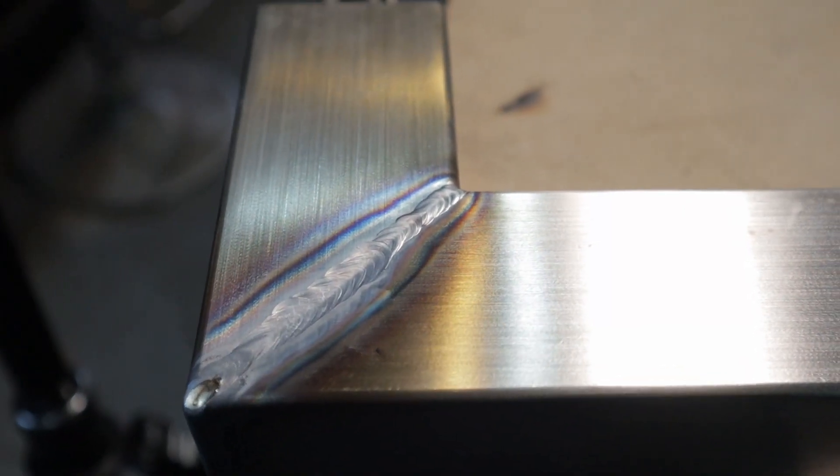When a mitre joint is being polished the flatter the joint the easier and faster it is to polish.